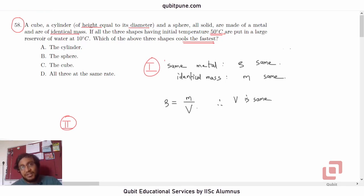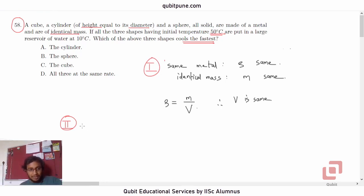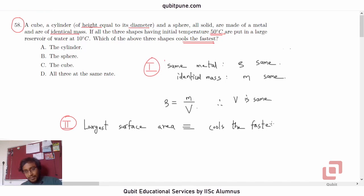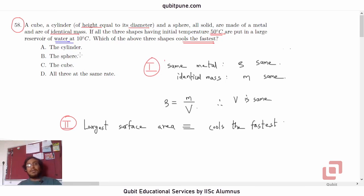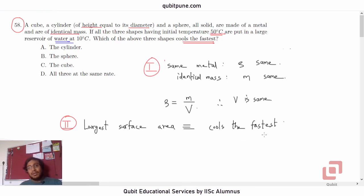Now on what criterion are we going to decide which of the three shapes cools the fastest? The one with the largest surface area is going to cool the fastest. Primarily, the mode of heat transfer in this case will be convection because all three solids are inserted in water. From Newton's law of cooling, the rate at which temperature drops is proportional not only to the excess temperature but also to the area. So the largest surface area cools the fastest.